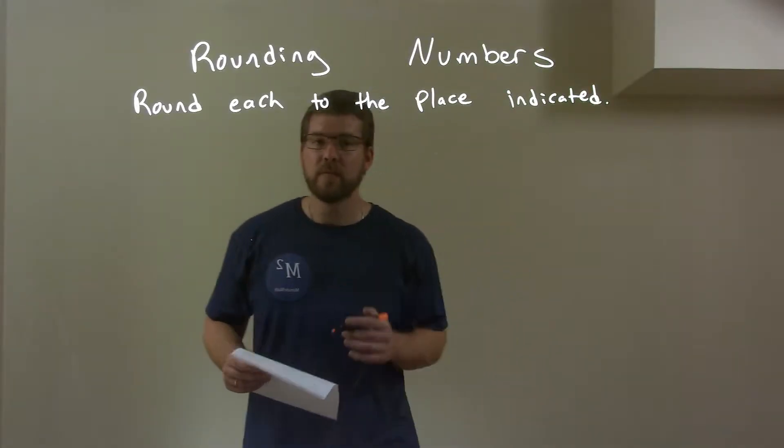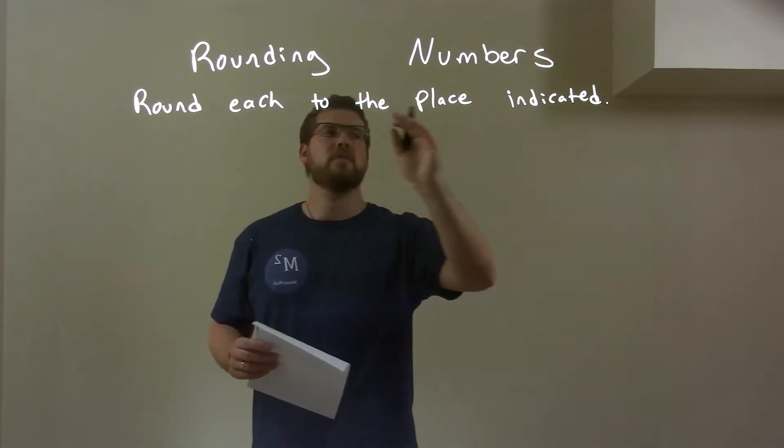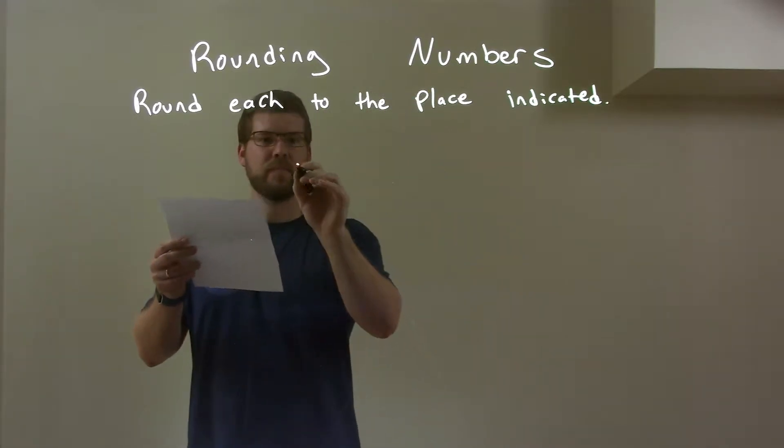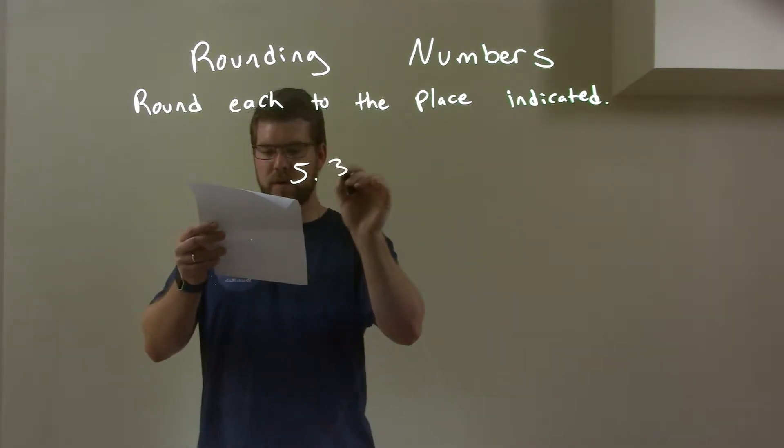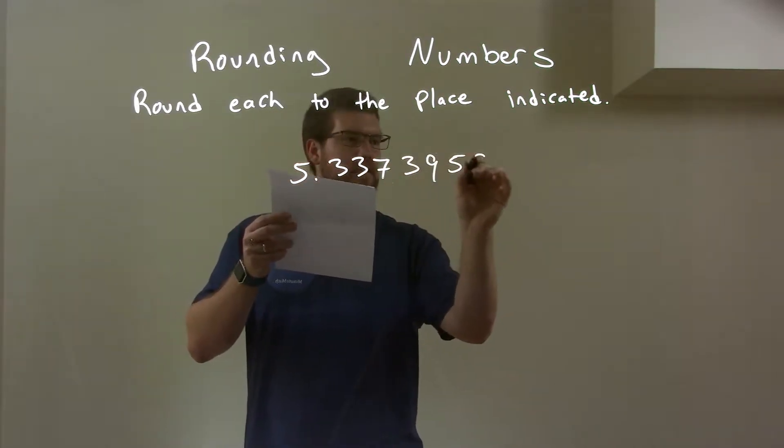Hi, I'm Sean again, and this is MinuteMath, and today we'll learn about rounding numbers to the place indicated. So if I was given this number, 5.3373959,